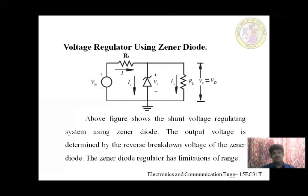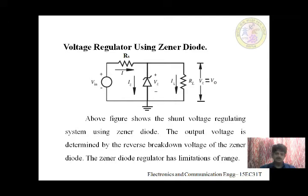A Zener diode is similar to a normal diode during forward bias — in the forward bias characteristics there are no differences between the Zener diode and the normal diode. But when it comes to reverse bias, the Zener diode has a sharp breakdown region. That is the major advantage of the Zener diode over the normal diode. This sharp breakdown is because the Zener diode is heavily doped.